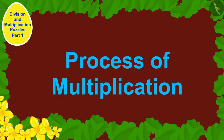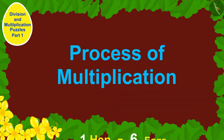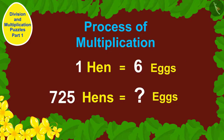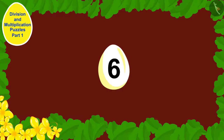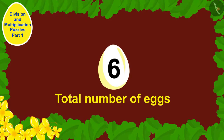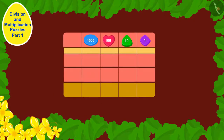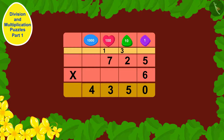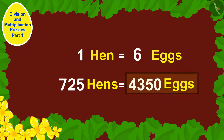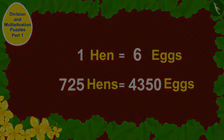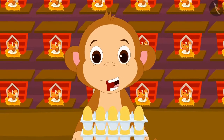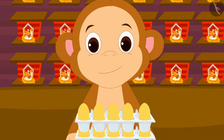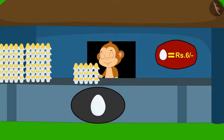We have to use the process of multiplication to find the total number of eggs. Each hen has laid 6 eggs, so to find the total number of eggs, we will multiply 6 by 725. Babban has a total of 4350 eggs. Oh wow! Babban was very happy and opened a new shop and started selling eggs.